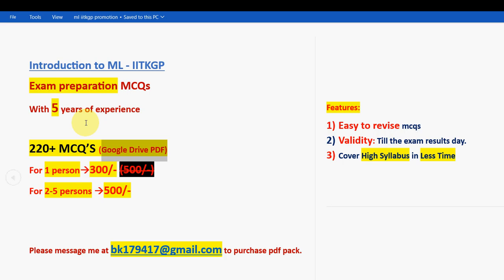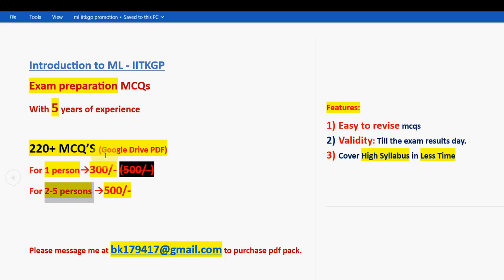For one person it is 300 rupees. If your friends or classmates are doing the same course, ask them to team up with you so that you can combine — take it as two to five persons together. If you take it combinedly, you can get it for 500 rupees only, so individually you can share a lesser amount.